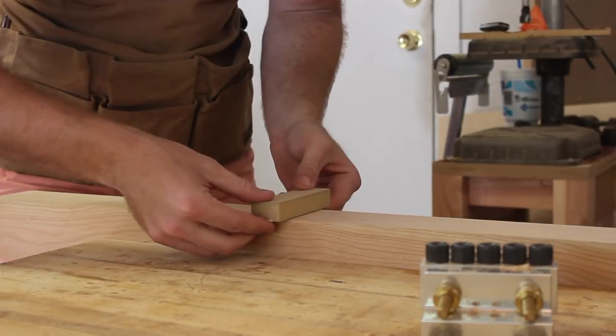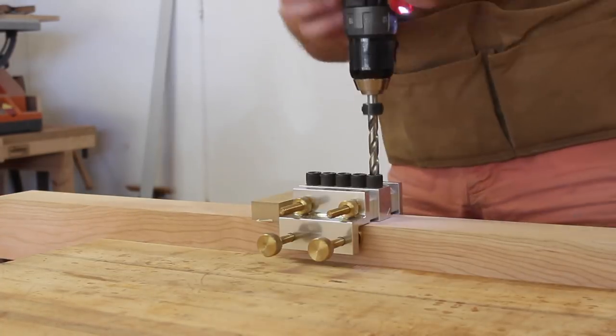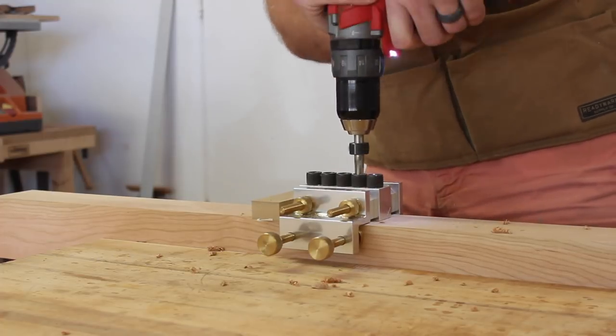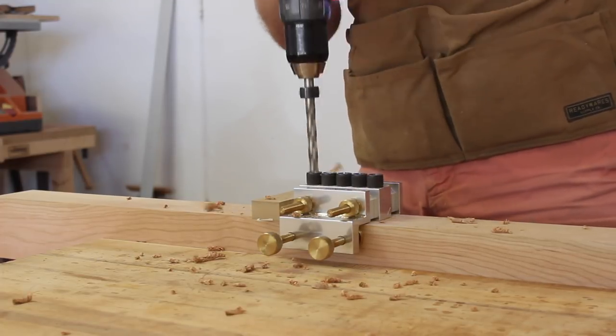I'm using this little MDF spacer to line up with the lines I marked up earlier. This way, I can use it as a point of reference for my doweling jig. I can just butt it up right against it, tighten it down, and drill the holes.